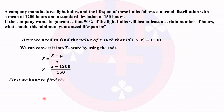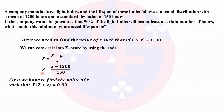Now we convert to the standard normal distribution. We need to find the value of Z such that P(Z > z) = 0.90. Once we get the Z value, we can substitute it back into the equation to find the corresponding X value.